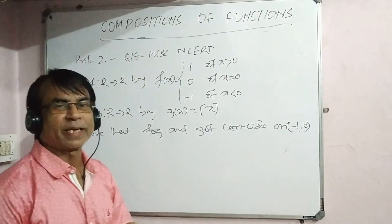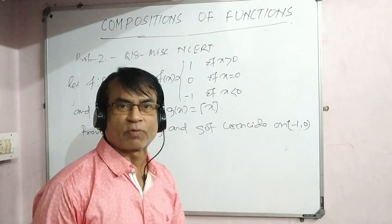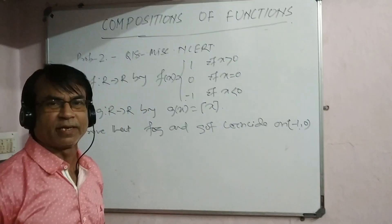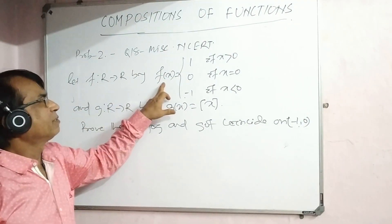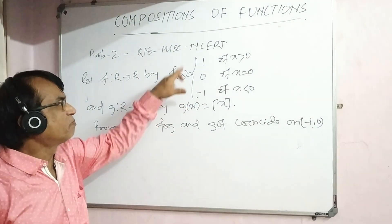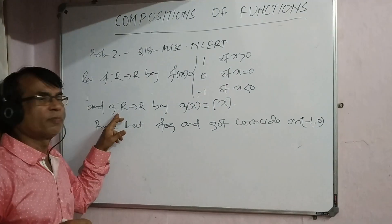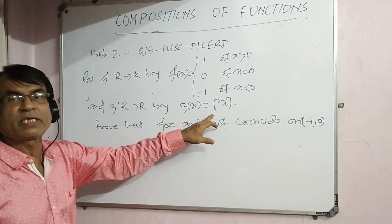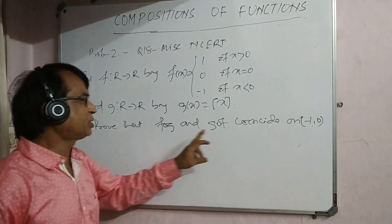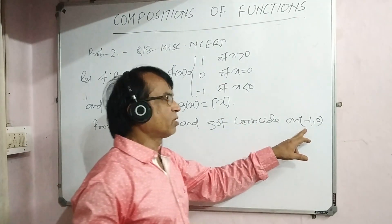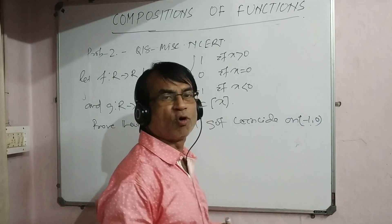This problem is taken from the miscellaneous section of NCERT, question number 18. Here F is a real function and it is a signum function. G is a real valued function and it is the greatest integer function. We have to prove that fog and gof coincide on the interval [−1, 0) — that is, minus 1 closed and 0 open.